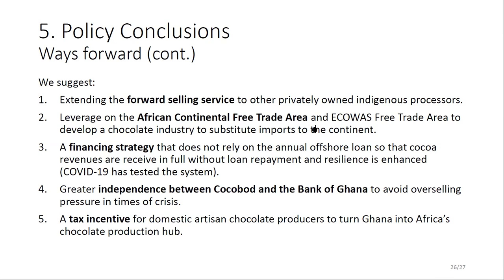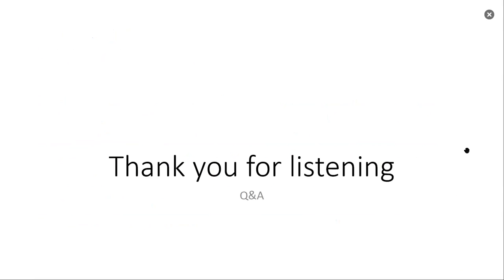We suggest greater independence between Cocoa Board and the Bank of Ghana to avoid overselling in times of crisis. Lastly, we highly recommend tax incentives for domestic artisanal chocolates to turn Ghana into Africa's domestic chocolate production hub. The current Cocoa Board management has been very aggressive in promoting domestic chocolate production, and with the African Continental Free Trade Area headquartered in Accra, that could be a big push for Ghana to become Africa's chocolate production hub. Thank you so much for listening.